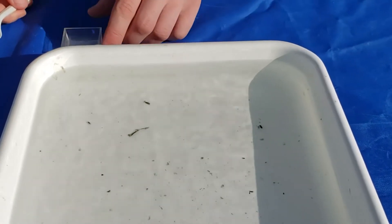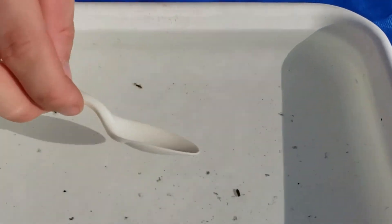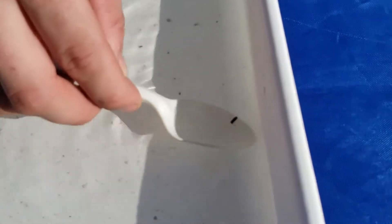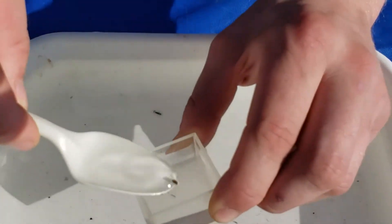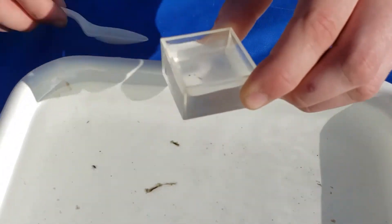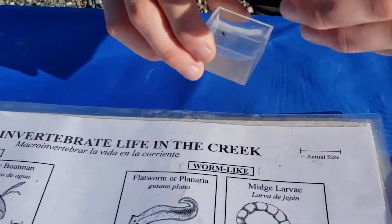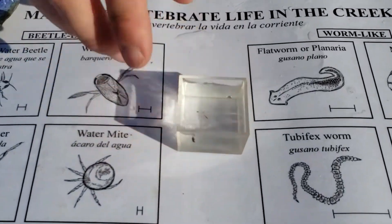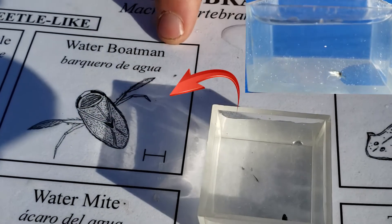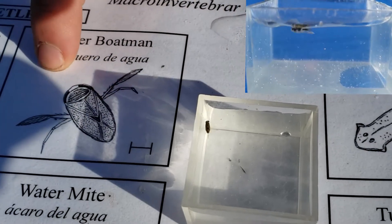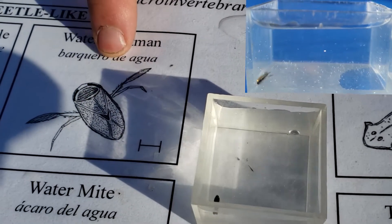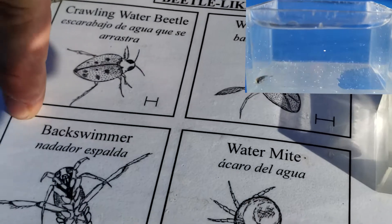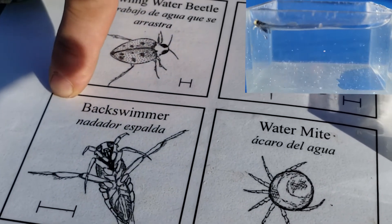Let's catch one more macroinvertebrate. This one is a little easier to see — it's a lot bigger, and it's also really fast. We're going to use the other side of that same key to identify it. To me, this one looks like a water boatman. It has a distinctive beetle-like shape and long arms that look like oars. I'm also noticing that it doesn't swim on its back like a back swimmer, which is pretty similar but definitely a different species.